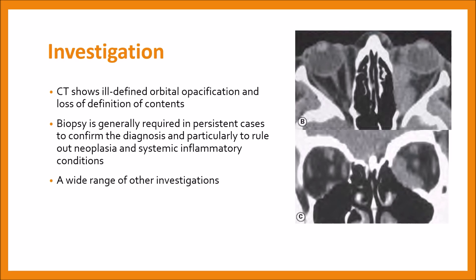Investigations include a CT scan, which shows ill-defined orbital opacification. This is very distinct from thyroid eye disease, where the orbital tissue is swollen but the tendons are spared. In IOID, you can see ill-defined orbital opacification and loss of definition of contents.